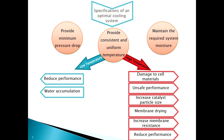Low temperature also reduces performance and causes water accumulation inside the fuel cell stack, which prevents the hydrogen ions from crossing the membrane. If water fills the spaces in the membrane, the hydrogen protons cannot cross it. Therefore, the temperature must be uniform.